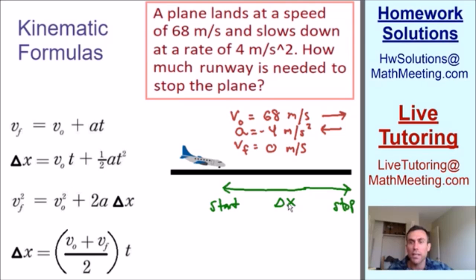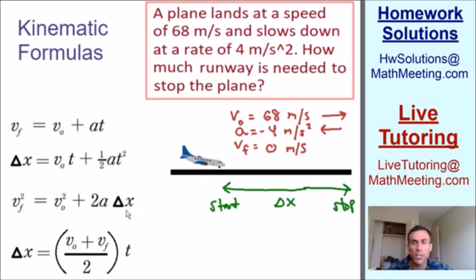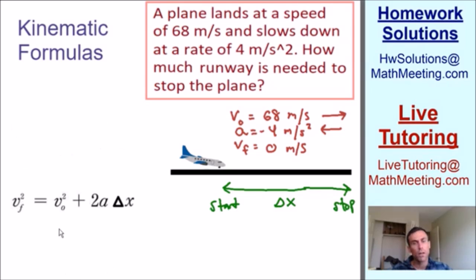Now we need to look at everything given to us and find out which equation to use. We've been given initial velocity, acceleration, and final velocity, and we need to find displacement delta x. Equation number three has final velocity, initial velocity, acceleration, and displacement delta x — so we need to use equation number three to solve for delta x. I'm going to erase the other equations to have more space. Now we just plug everything into our equation and solve for delta x.